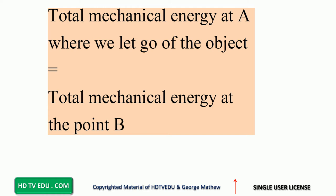When we let go of an object from a certain height, do not forget we let it go from rest. That means it has energy due to position only. Because it was at rest, the speed is zero — and if speed is zero, the energy due to motion at the start is zero.